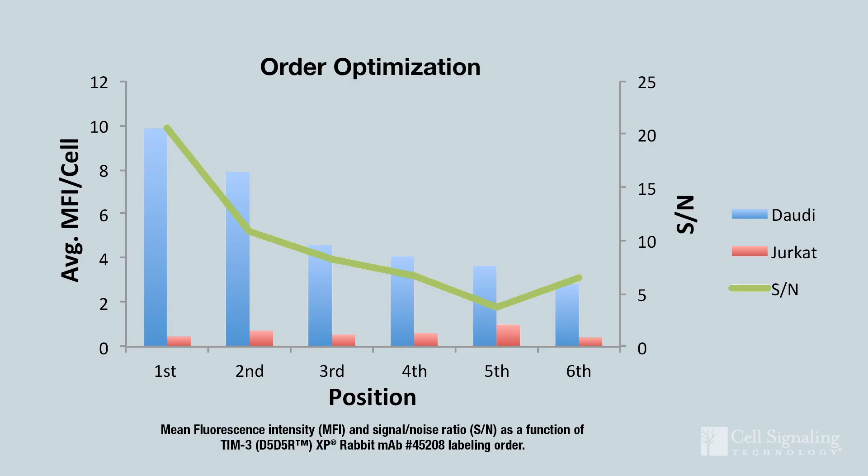Order optimization refers to the order each primary antibody is applied in the panel, which may affect the strength of staining either positively or negatively, depending on the epitope and the antibody. We'll cover this topic more in depth in a future video, but the basic idea is to assess the effects of multiple heating rounds on each epitope and on the staining you obtain. You can then adjust the order of antibody labeling slots to ensure the staining accurately depicts expression of all your targets.